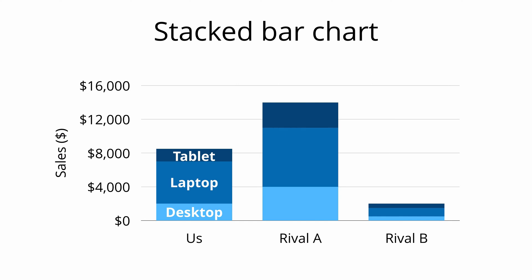We can add another dimension of data with a stacked bar chart. The x-axis represents different companies — us, rival A, and rival B. The y-axis once again represents sales in dollars. The stacked bars are color-coded in dark blue, blue, and light blue to represent the different products. This stacked bar chart shows us the sales of different products by company. We can conclude that rival A has the highest sales for desktops, laptops, and tablets.